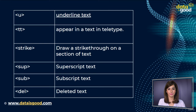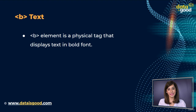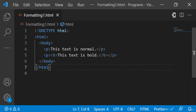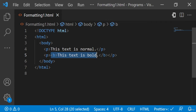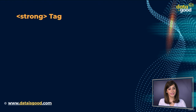Now let's see each tag one by one. The HTML `<b>` element is a physical tag that displays text in bold font. If you write anything within the `<b>` element, it is shown in bold letters. Here's an example: we have written 'this text is bold' in `<b>` tags. Let's see the output — great, the required text is in bold.